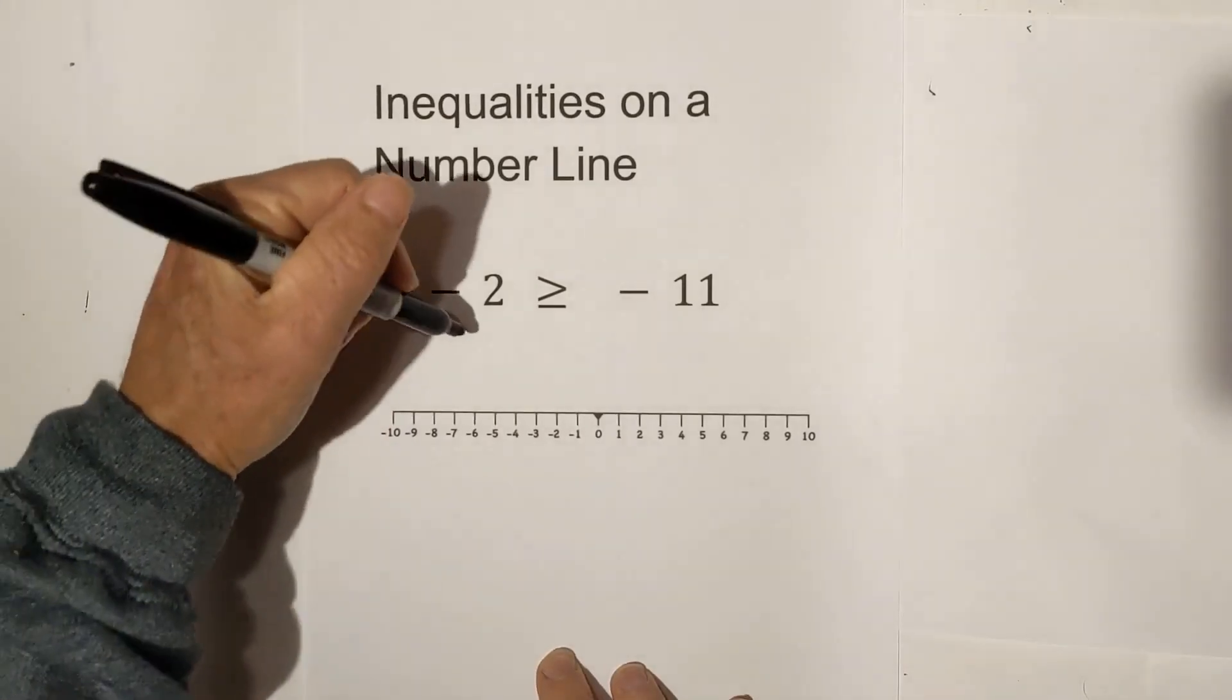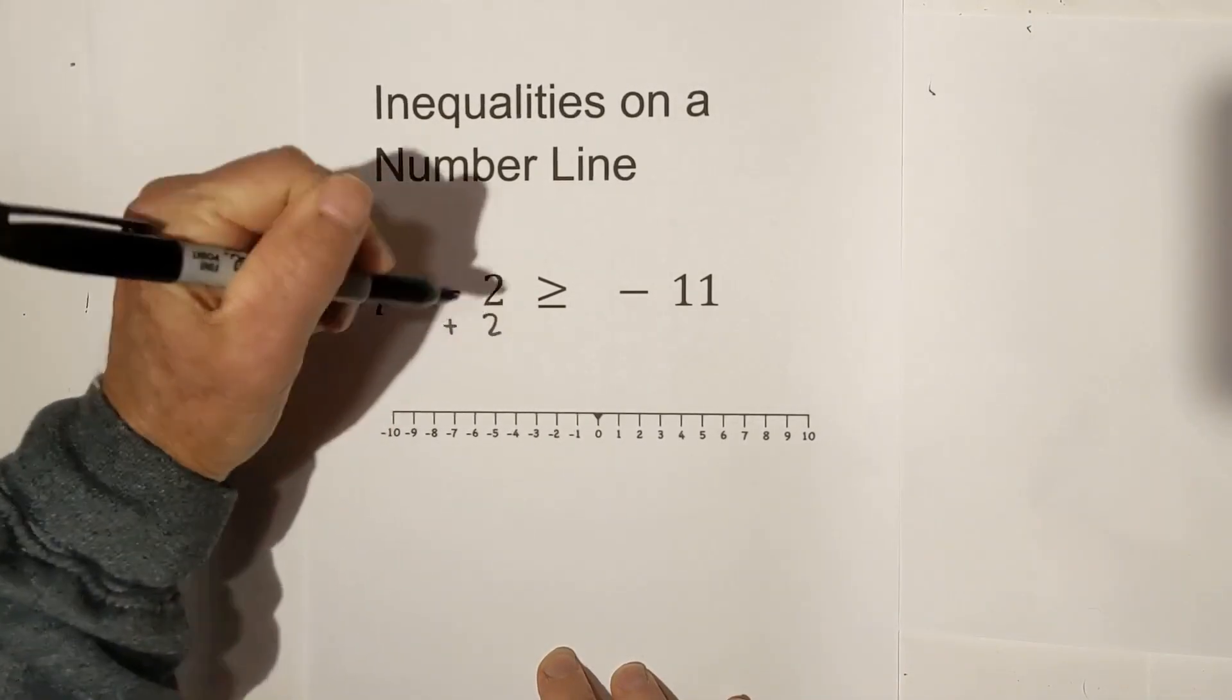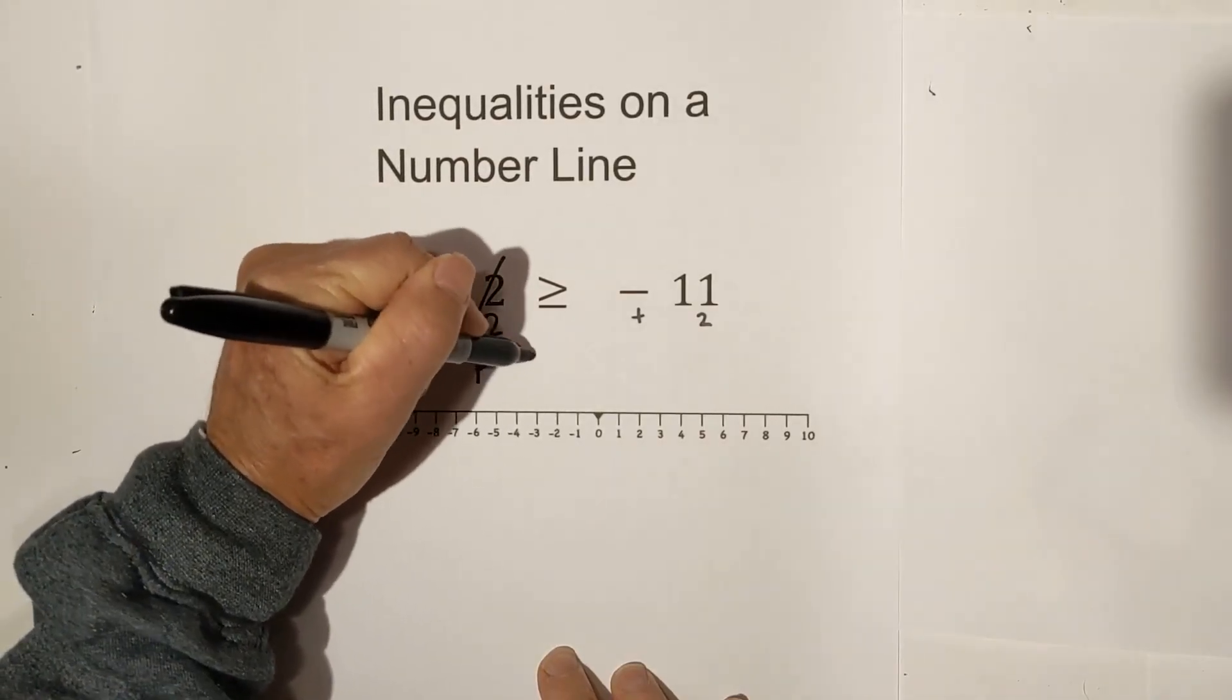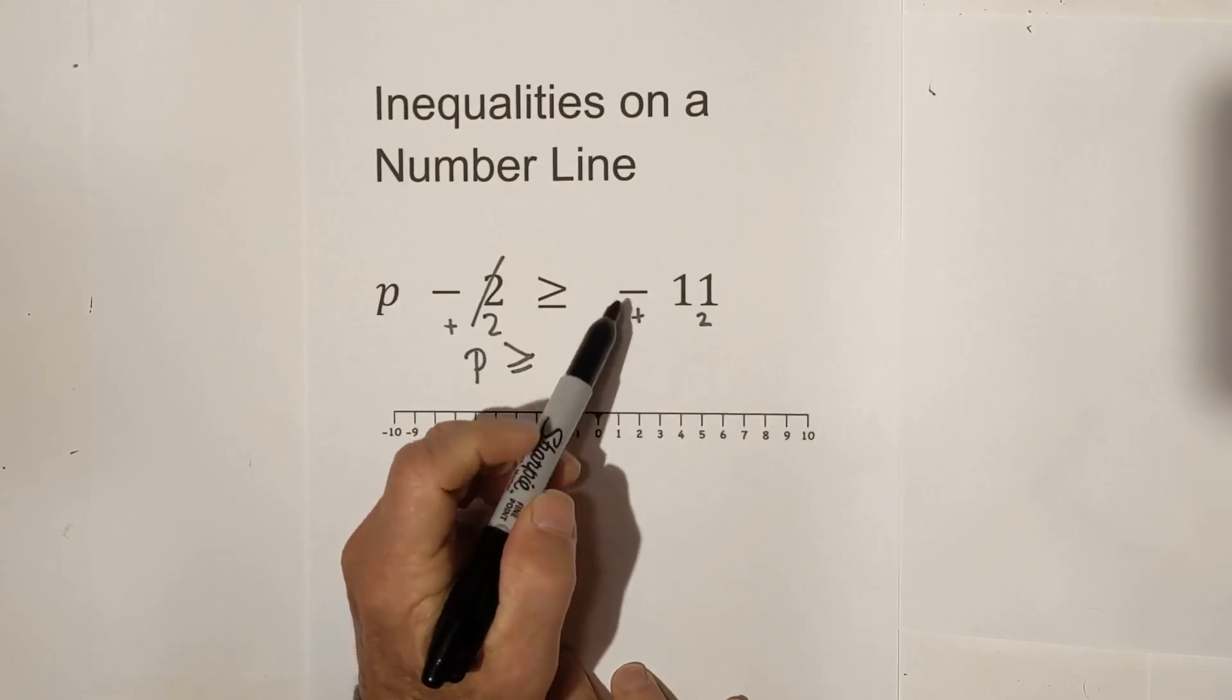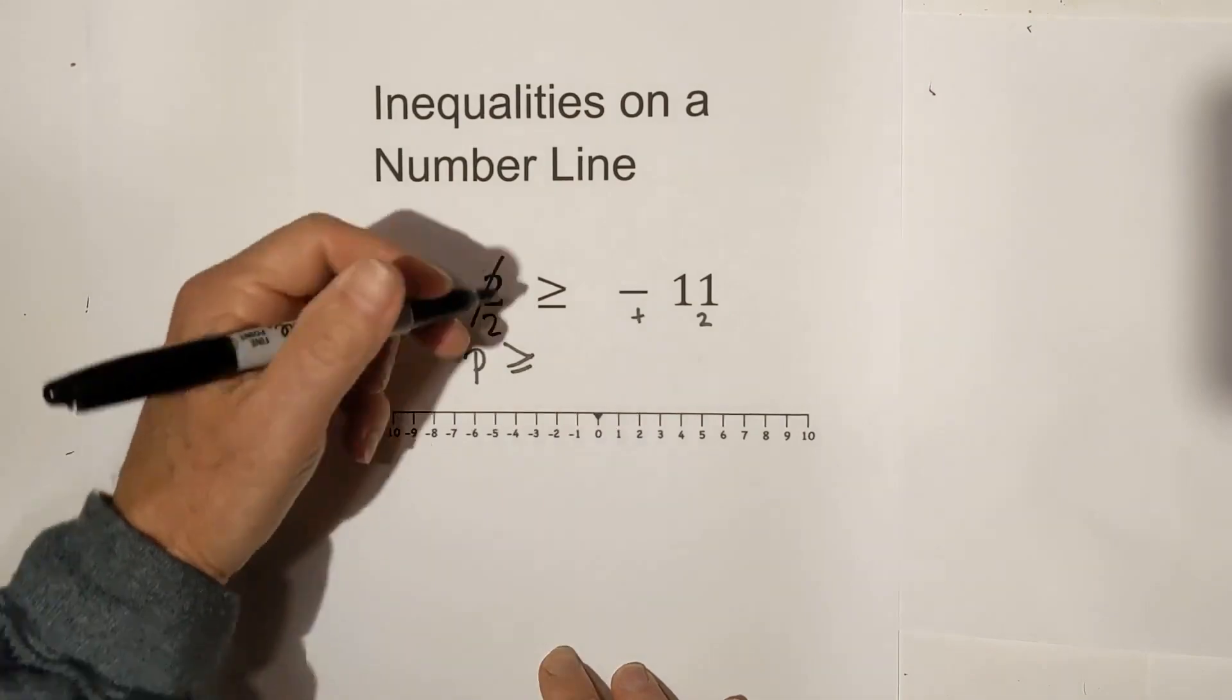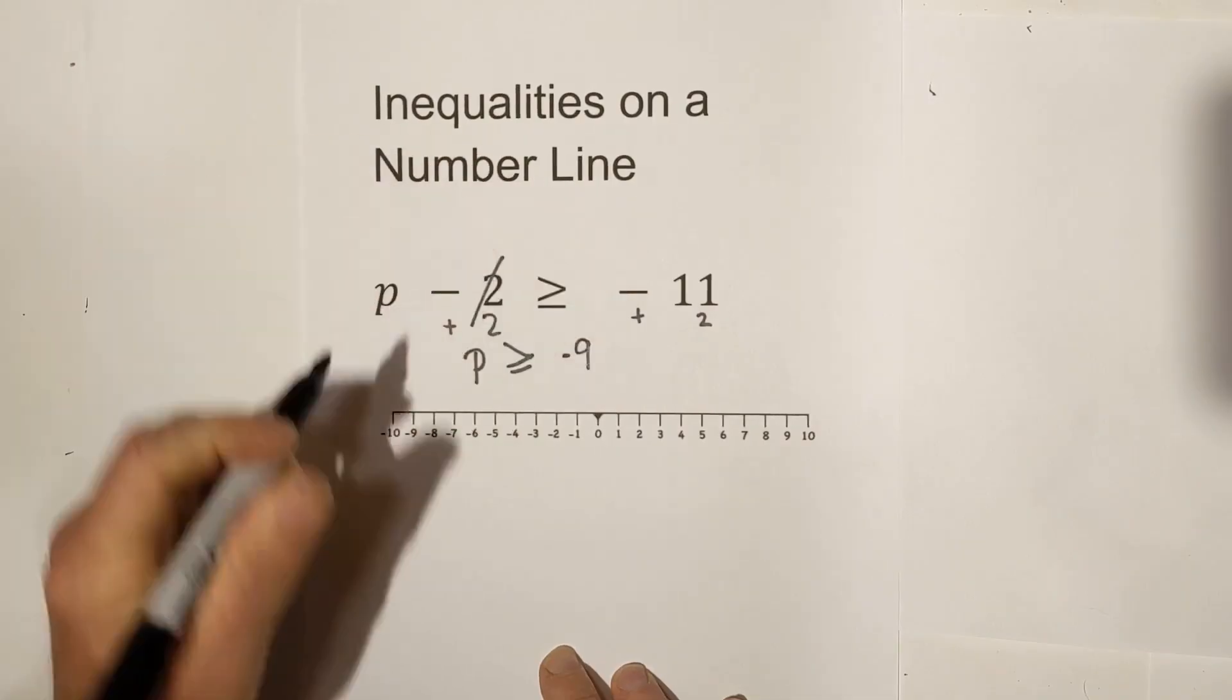First thing we want to do is isolate P, and so let's add 2 to each side. So these cancel. P is greater than or equal to, and then remember when you have positive and negative, basically you keep the sign of the larger number, and 11 minus 2 is 9, and it's going to be a negative 9.